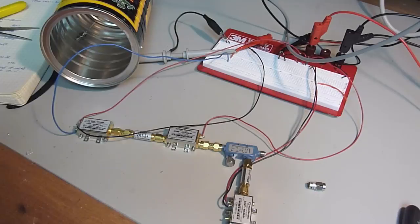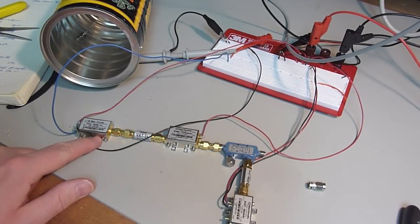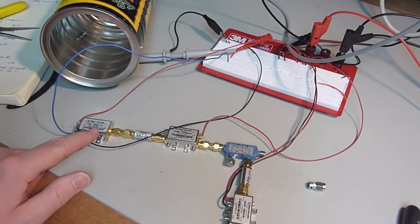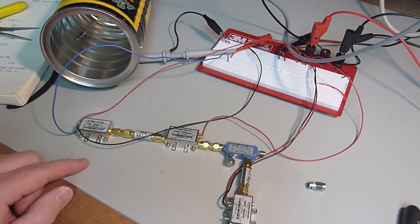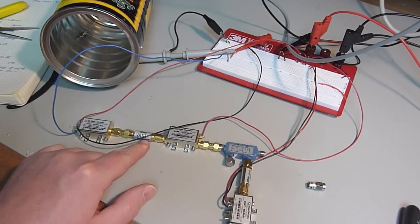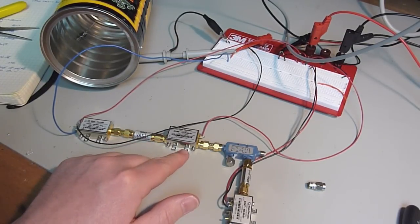So this is the system. This is the VCO that's in the coffee can radar, and it goes from 2.3 to 2.5 gigahertz. It's tuned with a 5 volt signal and runs off 5 volts. We go through a 3 dB attenuator, which basically cuts the power in half.